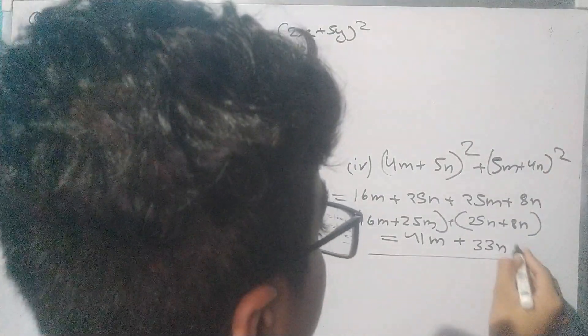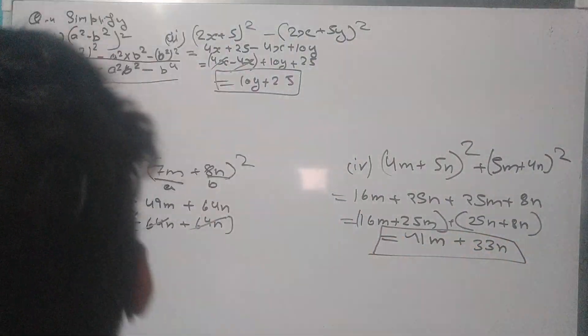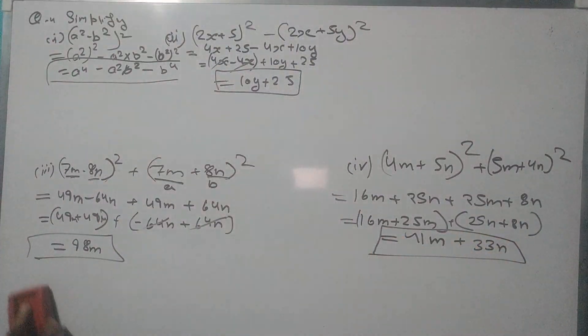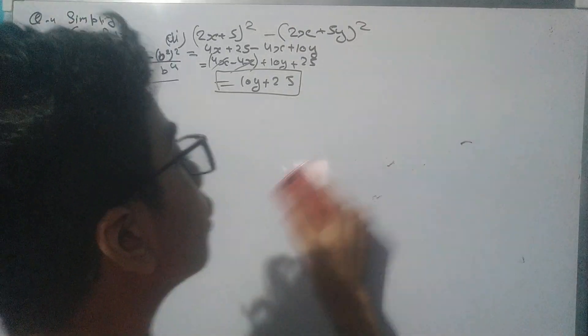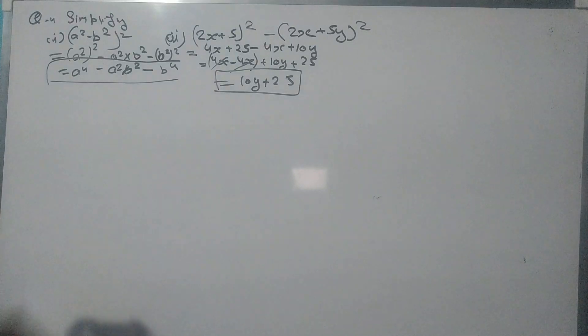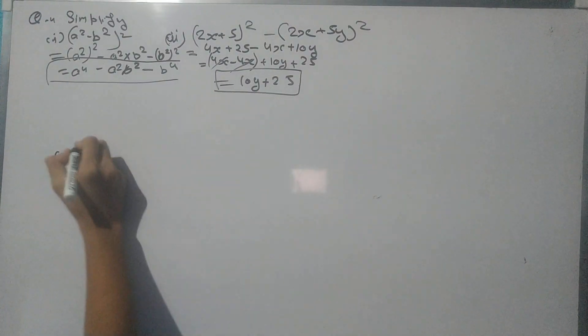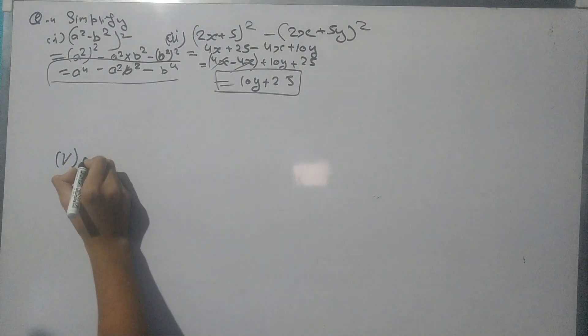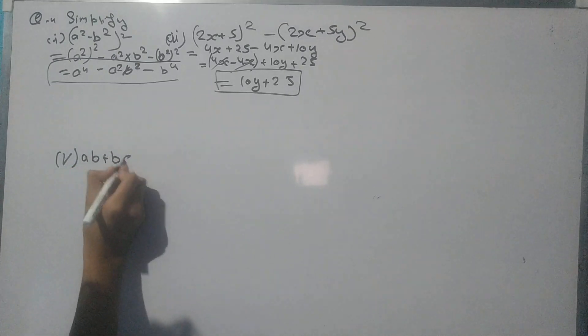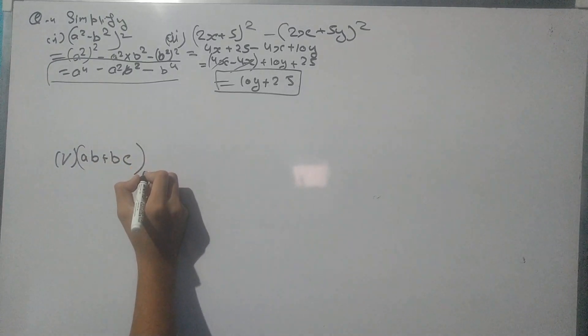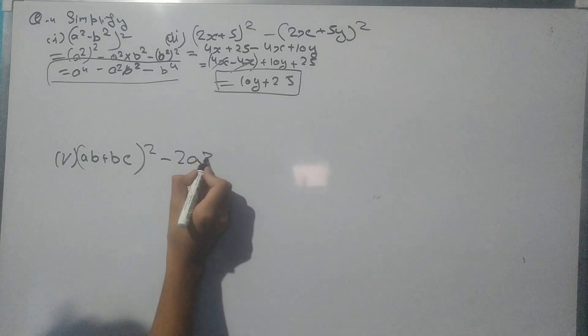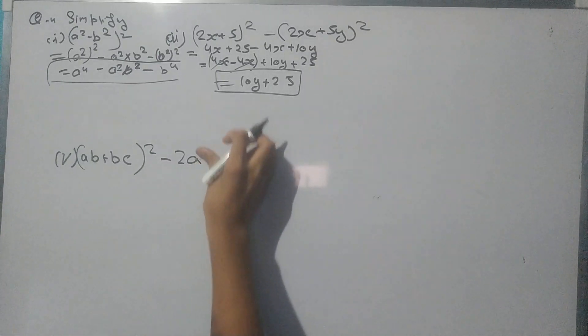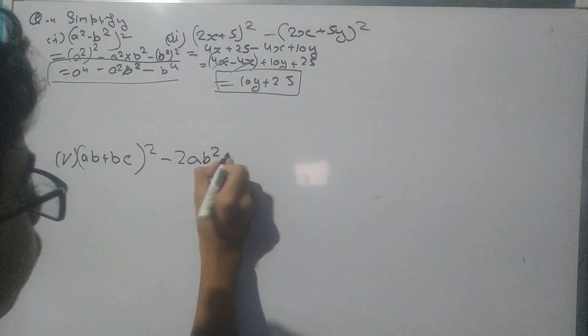So this is the answer for this question. Now let's come to the fifth part and also the last part of this question. In the fifth part we have got (ab + bc)² minus 2ab²c.